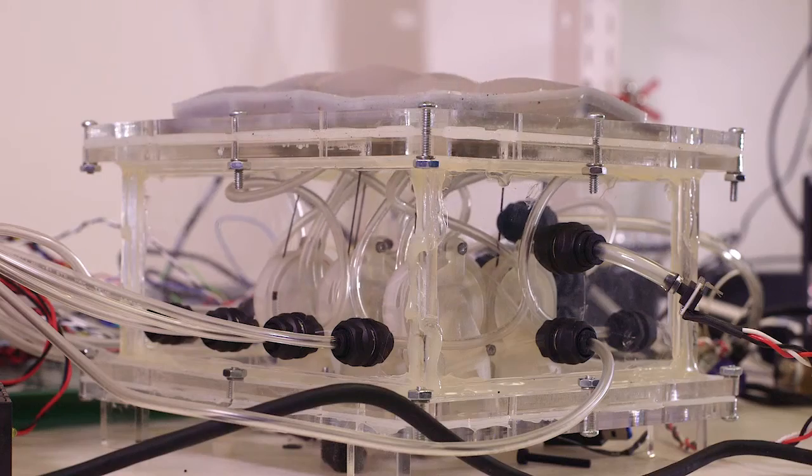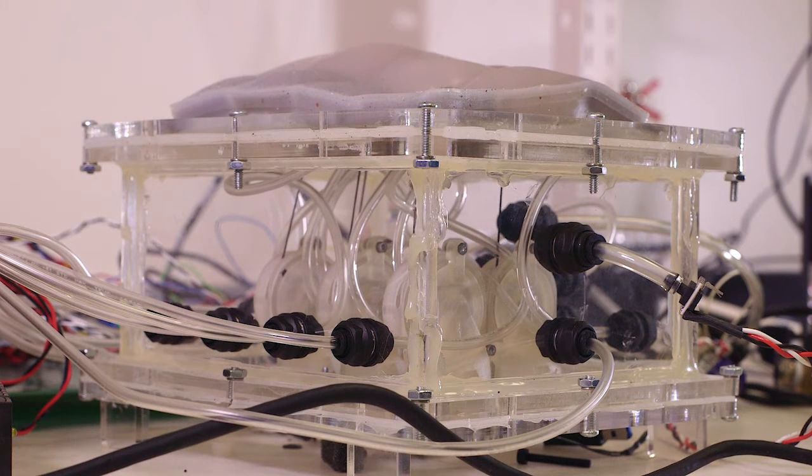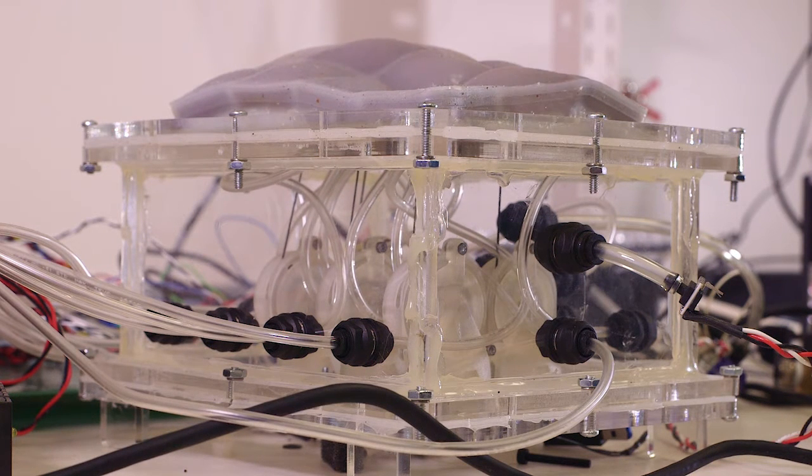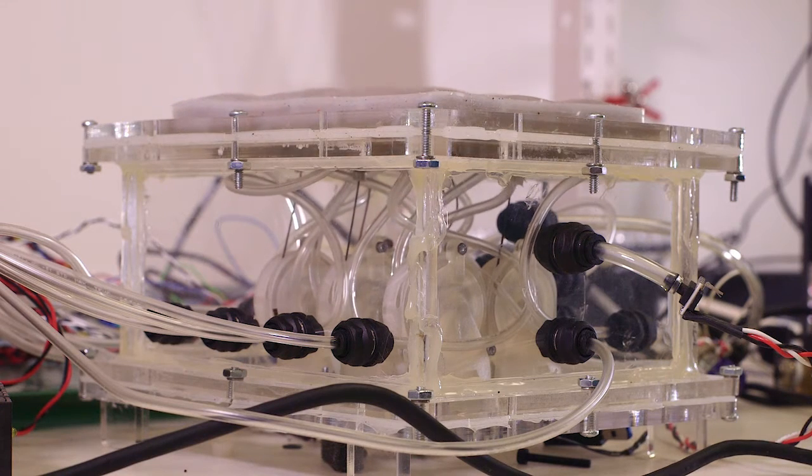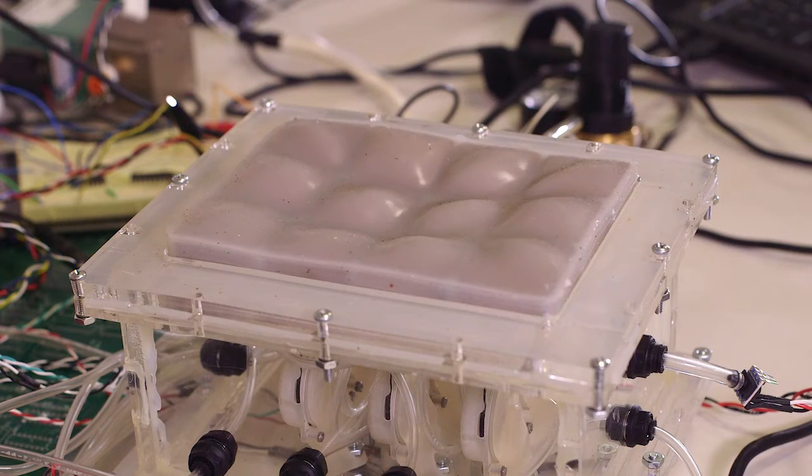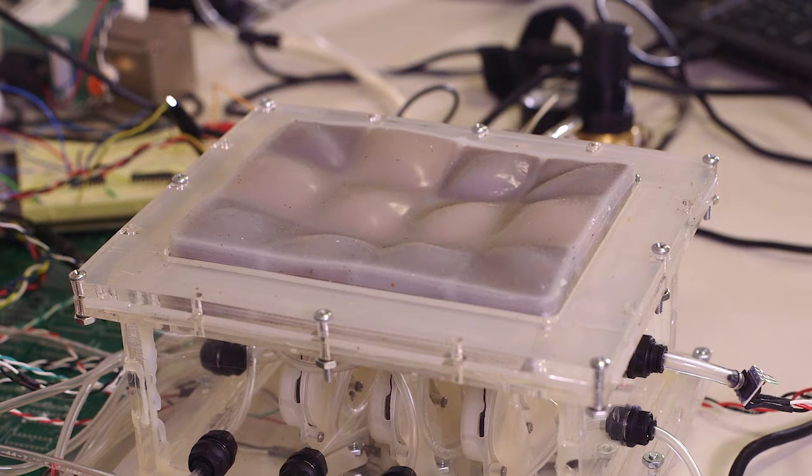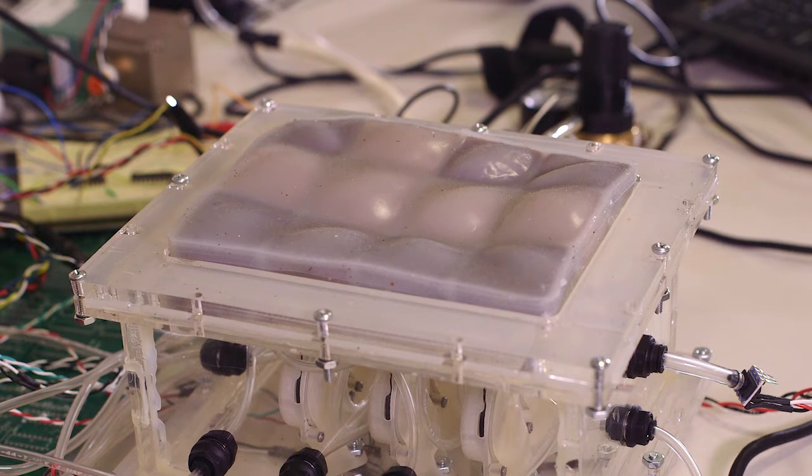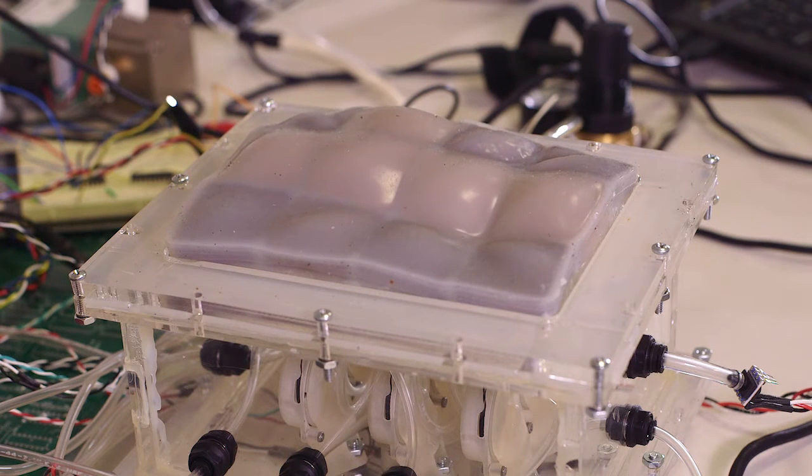And underneath it we can basically adjust the pressure of the air so that the whole thing will kind of balloon up with the pressure underneath it. And then by controlling which cells are soft and which cells are rigid when we increase the air pressure, the soft cells will balloon up and the rigid cells will hold their shape.